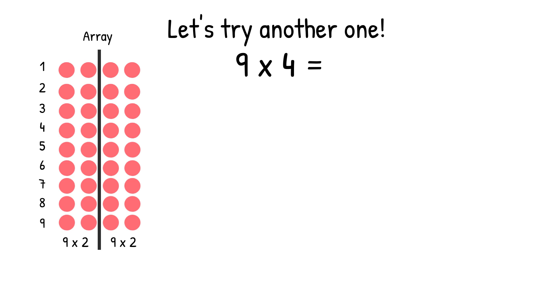Then we write our two smaller facts. So we have 9 rows of 2 on this side, and 9 rows of 2 on this side. Then we rewrite our equation, in parentheses, 9 times 2, plus, in parentheses, 9 times 2 equals. We find both products first before we add. So 9 times 2 equals 18, and 9 times 2 equals 18. Then we add those products together, 18 plus 18.